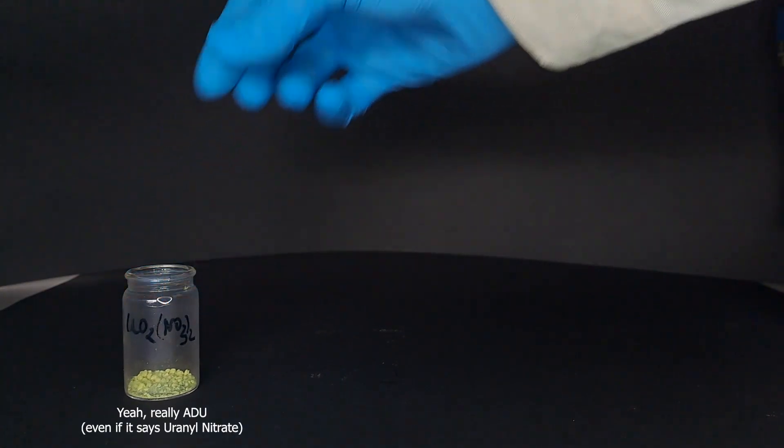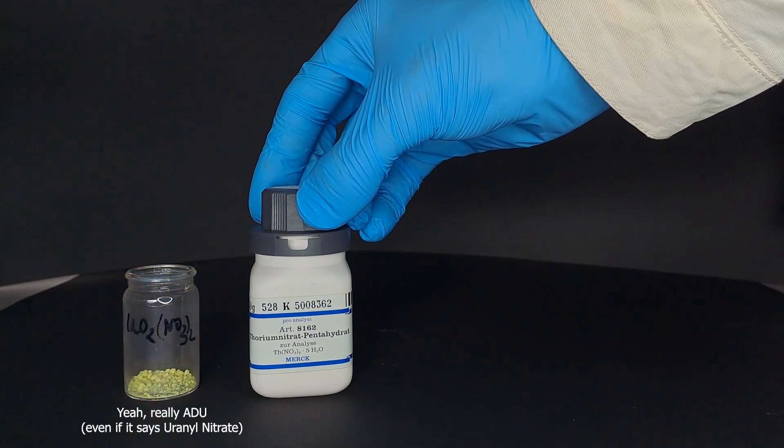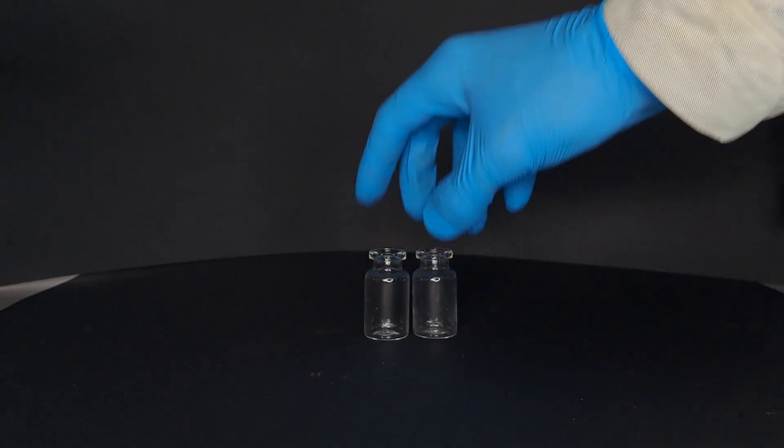However, what we do have is larger quantities of ammonium diuronate, thorium nitrate, and concentrated hydrochloric acid. As for equipment, we need two containers, a spatula, a syringe, and some creativity.